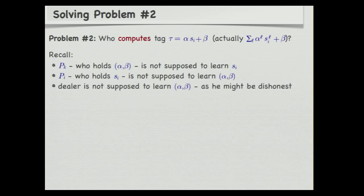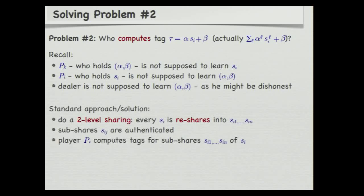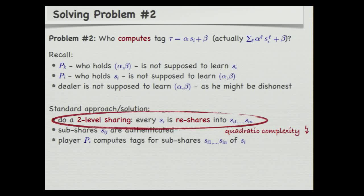The standard way all previous papers dealt with this issue is by not authenticating the shares directly, but by doing a second level of sharing and then authenticating the subshares. The dealer shares a secret; every player takes his share, re-shares his share, and then computes the tags for the resulting subshares. The problem for us is that as soon as we start sharing shares, we get a quadratic number of subshares, so we get at least quadratic communication complexity. This is one of the reasons why previous work didn't get below quadratic communication complexity. We want to do better.